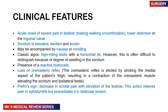Clinical features: the patient gets an acute onset of severe pain in the testicle, making it very uncomfortable for them to walk. They will have low abdominal or inguinal canal pain because of the origin of the testes and innervation. The scrotum is elevated, swollen, and tender. They may sometimes have nausea and vomiting. The classic sign is a high-riding testes with a horizontal lie; however, this is quite difficult to elicit because of the degree of swelling and pain.